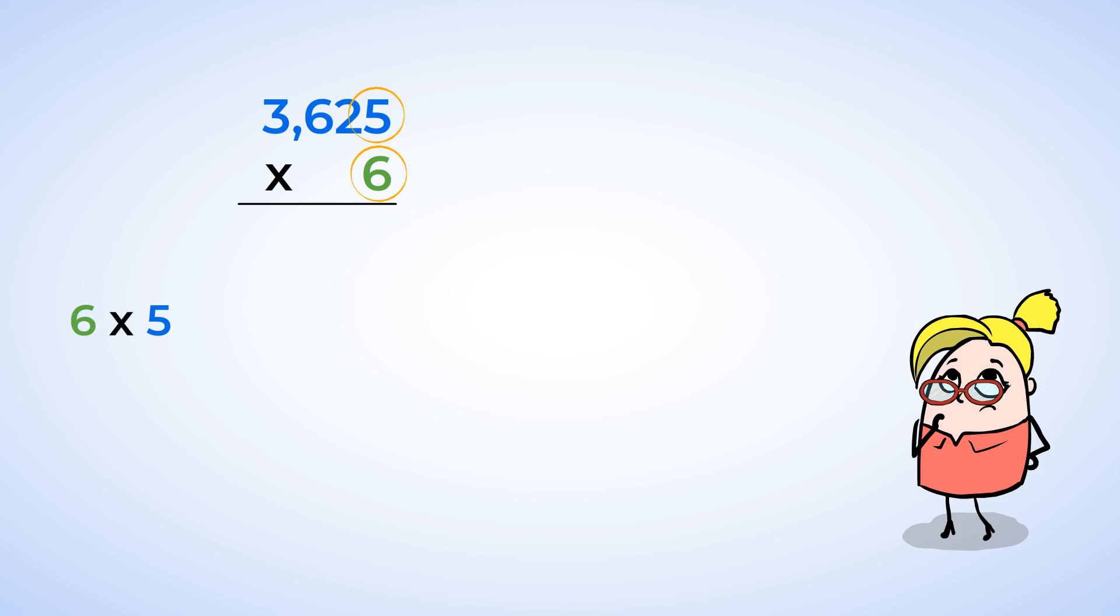Okay, 6 times 5 is 30. Okay, the 0 stays in the ones place, and the 3 is carried over. Next, 6 times 2 is 12. And now we can add the carried over 3. So 12 plus 3 is 15. Place that 5 in the tens place, and carry the 1. 6 times 6 is 36. But don't forget to add the 1 to get 37.